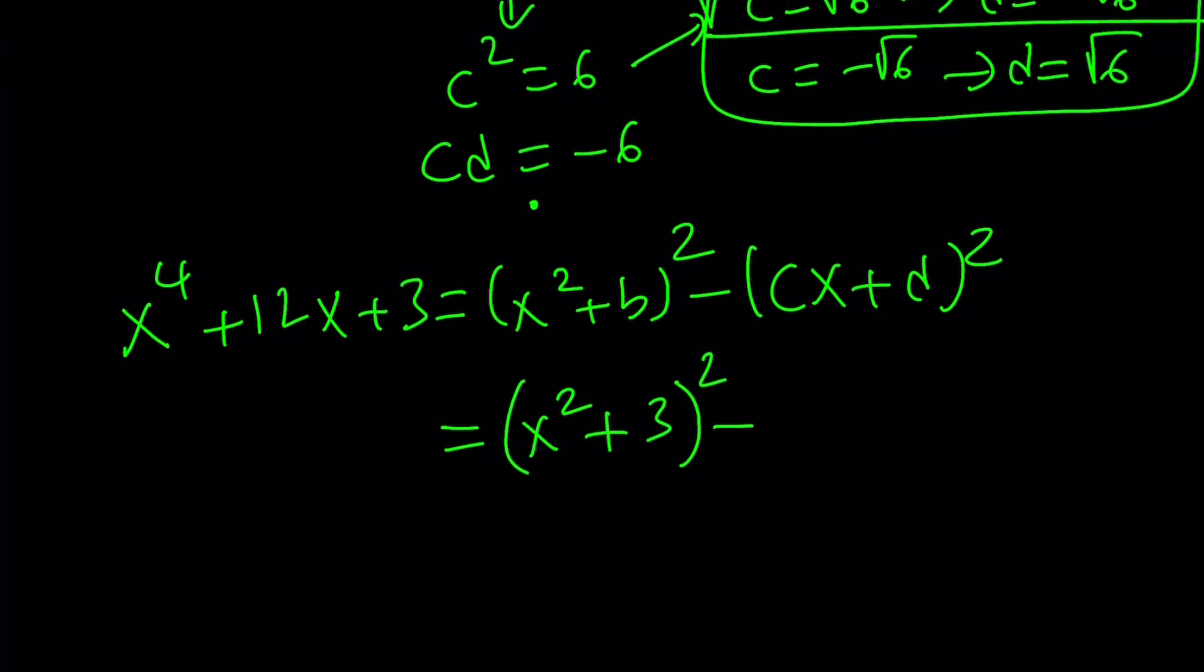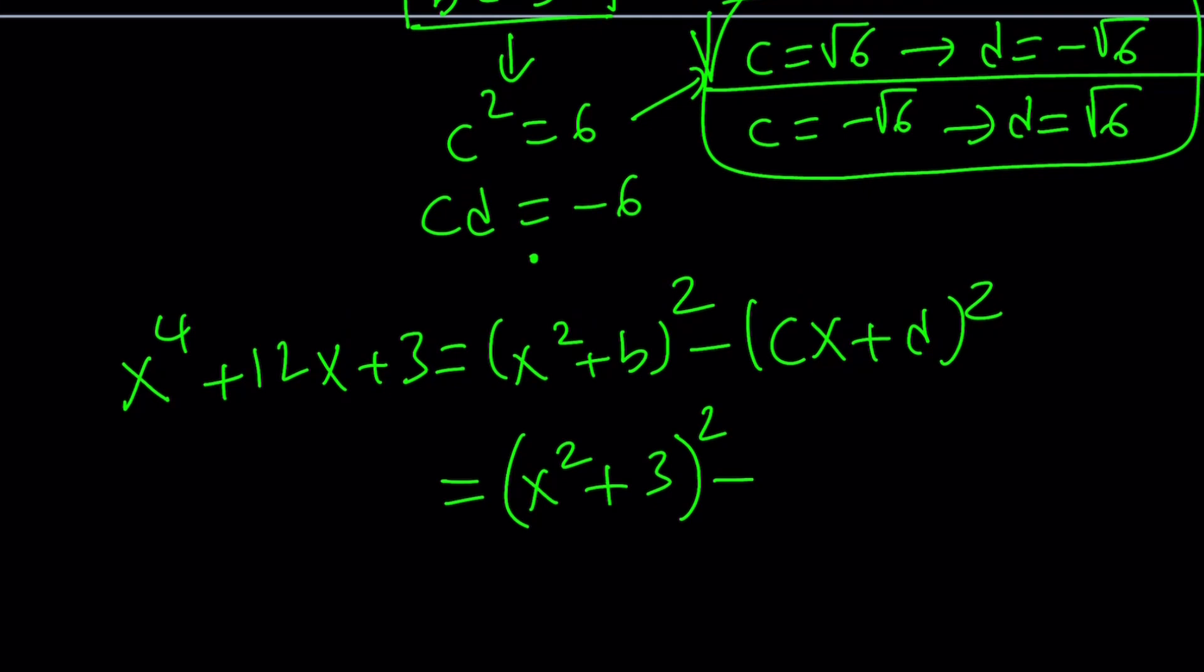For c I told you I was going to use the positive term. It doesn't matter if you do the other way around. Square root of 6 times x minus square root of 6 squared. And this is equal to x to the 4th plus 12x plus 3. And you're like, what? Are you serious?